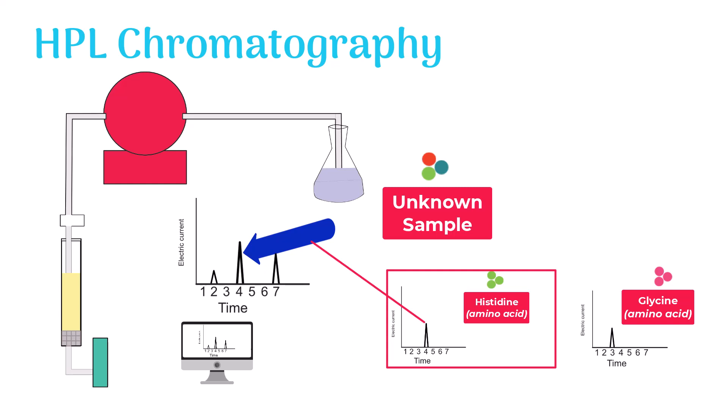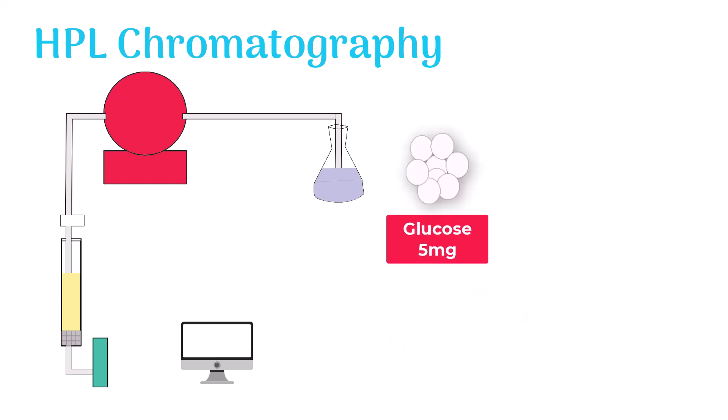Using HPLC chromatography, we can also divulge the concentration of a sample component. Let's look at an example. Let's take 5 mg glucose as a sample and run HPLC. We get this chromatogram with one peak on it at time 3 minutes.